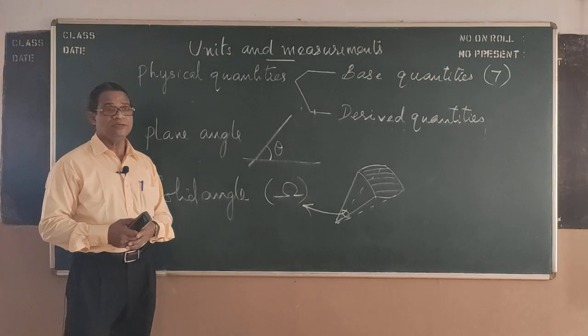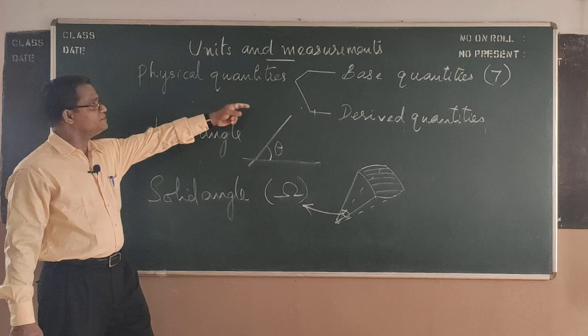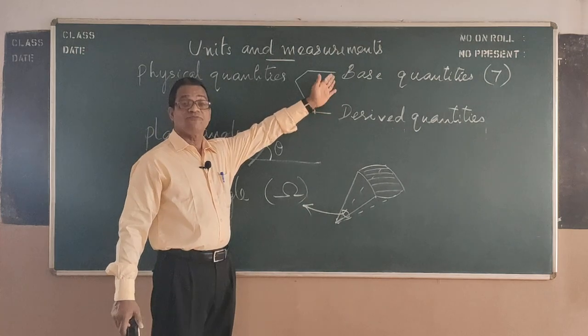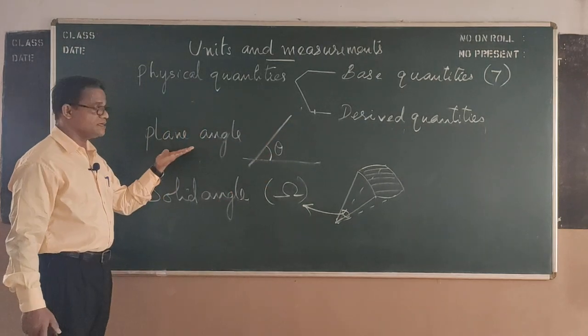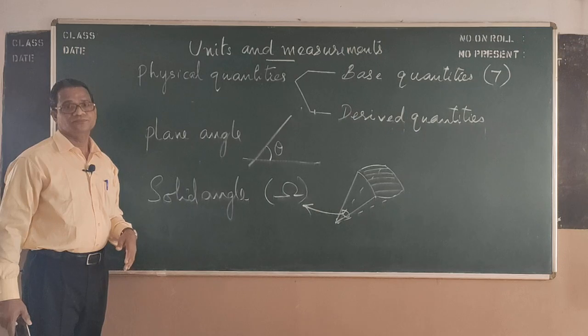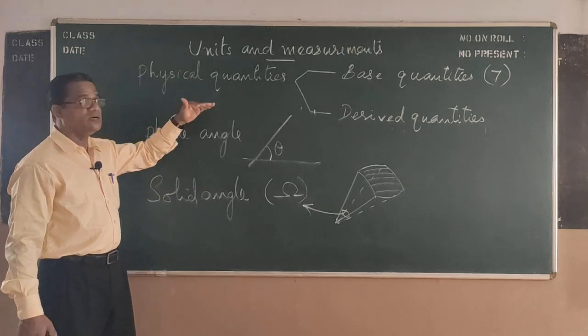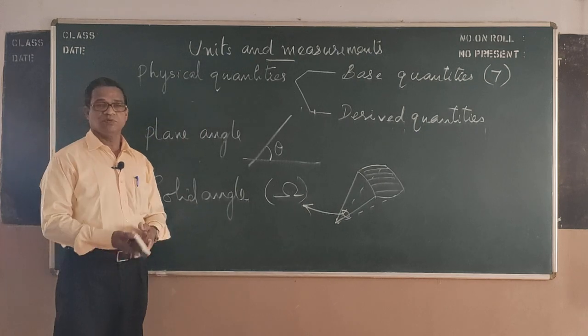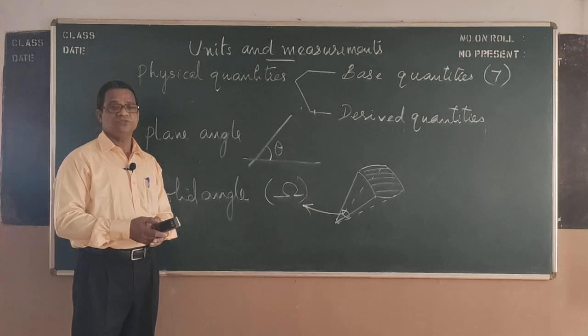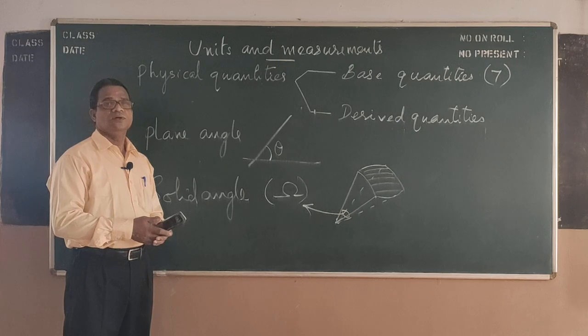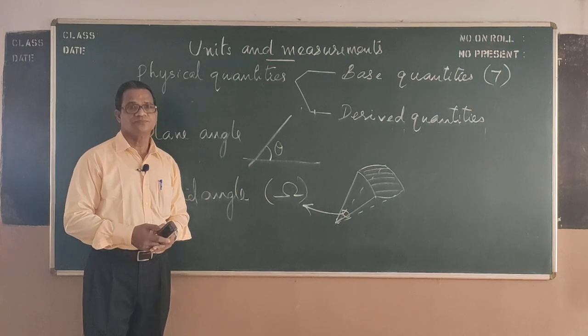So what are the things we understood from this? Physical quantities, classification of quantities - these quantities are fundamental quantities, derived quantities, then supplementary quantities. This is the starting part of this chapter physical quantities. So we continue the session and in the next session we will be discussing units. Thank you.